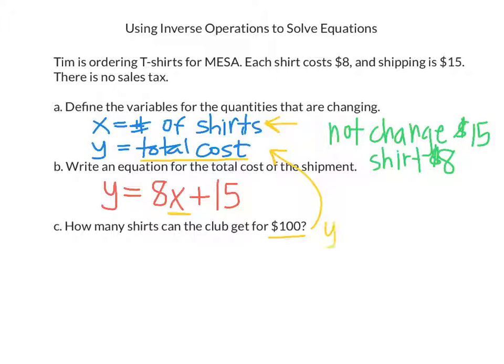So sometimes I even off to the side write for myself, Y equals 100. So I tell myself whether I think it's the X or the Y. So since it is the Y, I'm going to replace the Y in my equation with 100. So 100 equals 8X plus 15. So now I'm going to solve it. And it's a two-step equation. So I start by undoing the addition. So I subtract 15 from both sides.